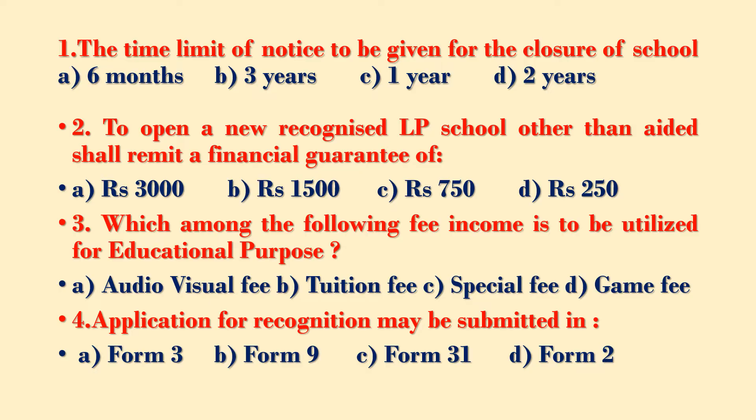Time limit of notice to be given for the closure of a school: Option A – six months, Option B – three years, Option C – one year, Option D – two years.